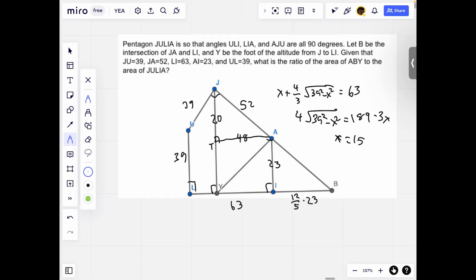And then since AT is 48 and ATYI is a rectangle because this angle is 90, this angle is 90, this angle is 90, so this angle is 90. Then this is 48.